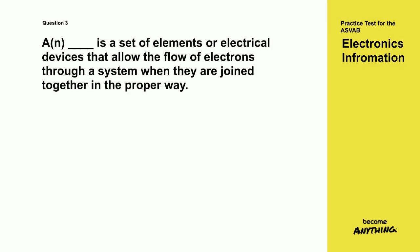Question 3. What is a set of elements or electrical devices that allow the flow of electrons through a system, when they are joined together in the proper way? A. Alternator. B. Power transformer. C. Circuit. D. Battery.